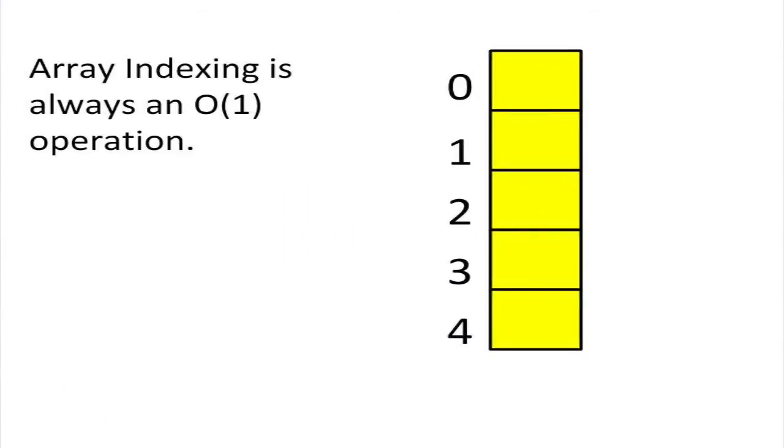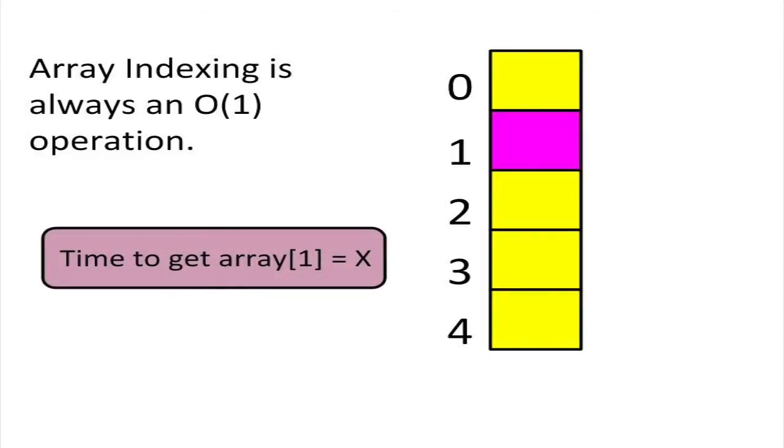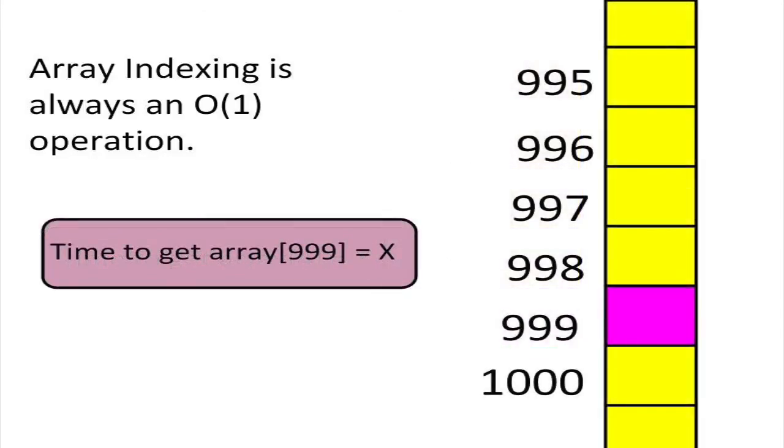Looking up elements by index makes an array very efficient. No matter where an item is stored in the array, it always takes the same amount of time to retrieve it. In technical terms, getting an item from an array is an O of 1, or constant time, operation.